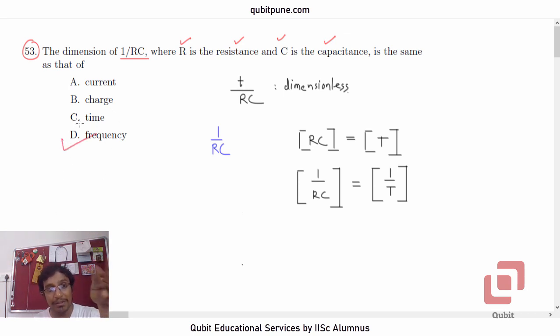Now options C and D might create some confusion here, but you shouldn't be worried too much about it. Because if T by RC is dimensionless, RC must have dimension of time. So 1 upon RC should have a dimension of frequency.